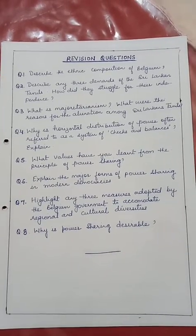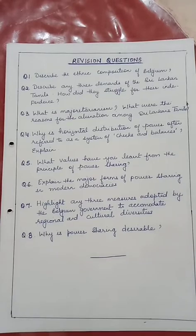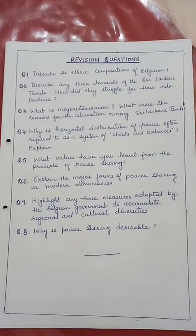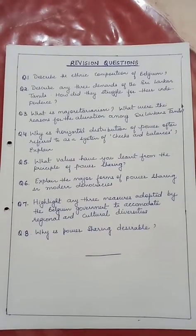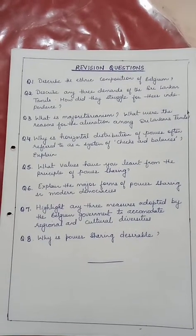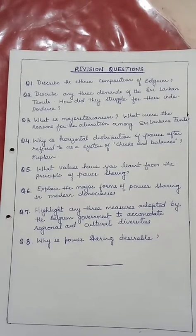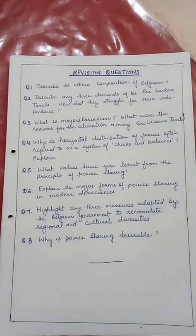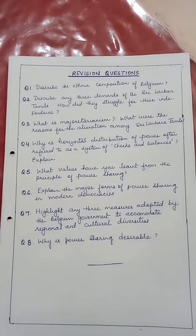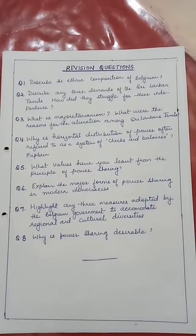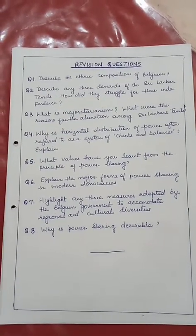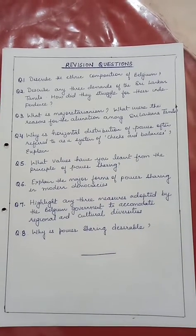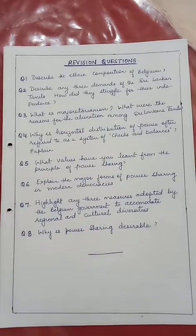As we come to the end of the lesson, here are some revision questions for you to do in your copy. There are around eight questions. One: describe the ethnic composition of Belgium. Two: describe any three demands of Sri Lankan Tamils — how did they struggle for their independence? Three: what is majoritarianism, and what were the reasons for the alienation among Sri Lankan Tamils? Four: why is horizontal distribution of power often referred to as a system of checks and balances? Five: what values have you learned from the principle of power sharing? Six: explain the major forms of power sharing in modern democracies. Seven: highlight any three measures adopted by the Belgian government to accommodate regional and cultural diversity. Eight: why is power sharing desirable? Please revise these questions.